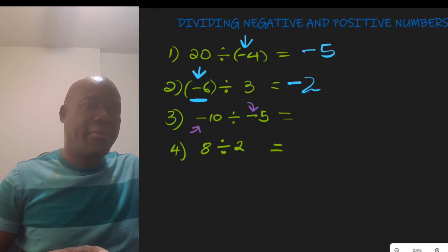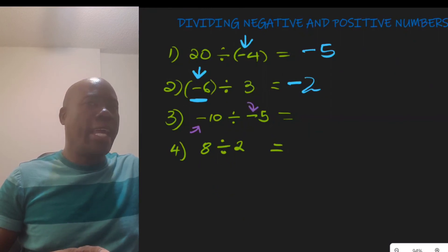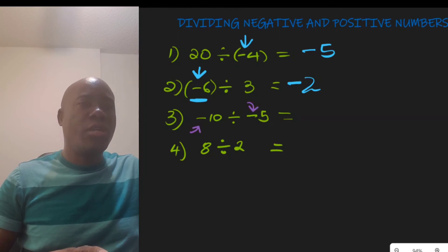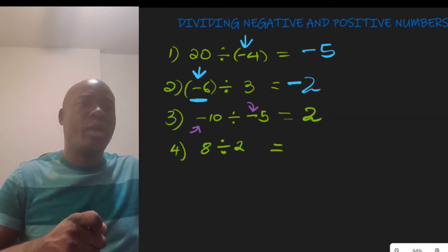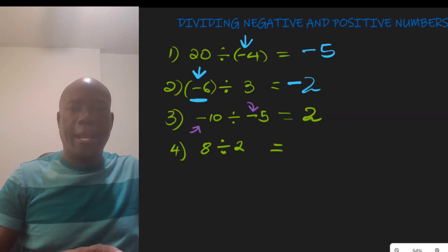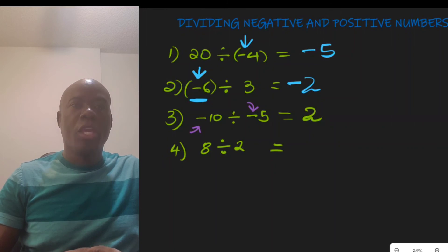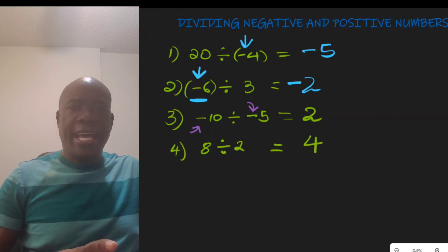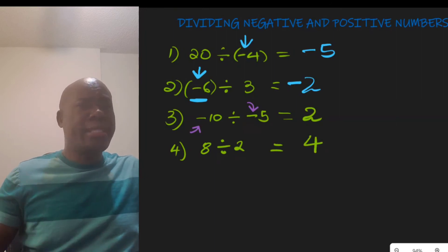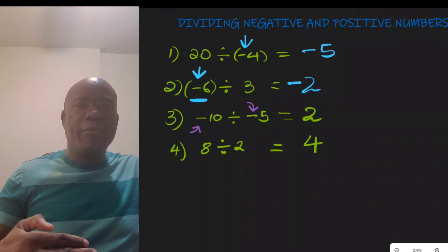At number 3, we have negative 10 divided by negative 5. Two negative numbers dividing gives a positive result, so 10 divided by 5 is 2, and the answer is positive 2. And positive 8 divided by positive 2 is positive 4.